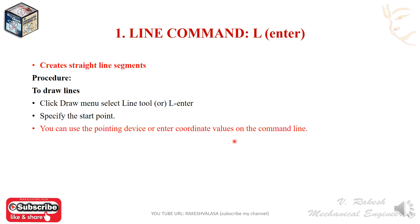In AutoCAD, we have three coordinate systems. The first one is the absolute coordinate system. The second one is the relative coordinate system. The third one is the polar relative coordinate system. In the absolute coordinate system, it takes lines from the origin point. In the relative coordinate system, it takes the point from the previous point. In the polar relative coordinate system, it takes the previous point and also the angle.